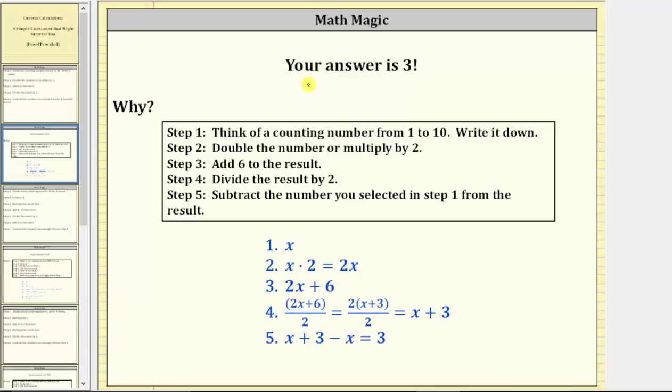But let's take a look at why the answer is always three. Step one was to think of a counting number from one to ten. Because this number is unknown, let's represent the unknown counting number using the variable x.